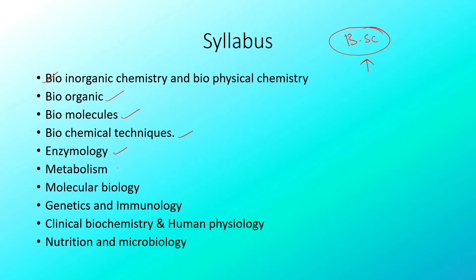Next is Metabolism: carbohydrate metabolism, amino acid metabolism, lipid and fatty acid metabolism, nucleic acid metabolism, and hormonal metabolism. Carbohydrate metabolism includes glycolysis, the TCA cycle, and the electron transport chain. You need to know both the synthesis (anabolism) and degradation (catabolism) of molecules.